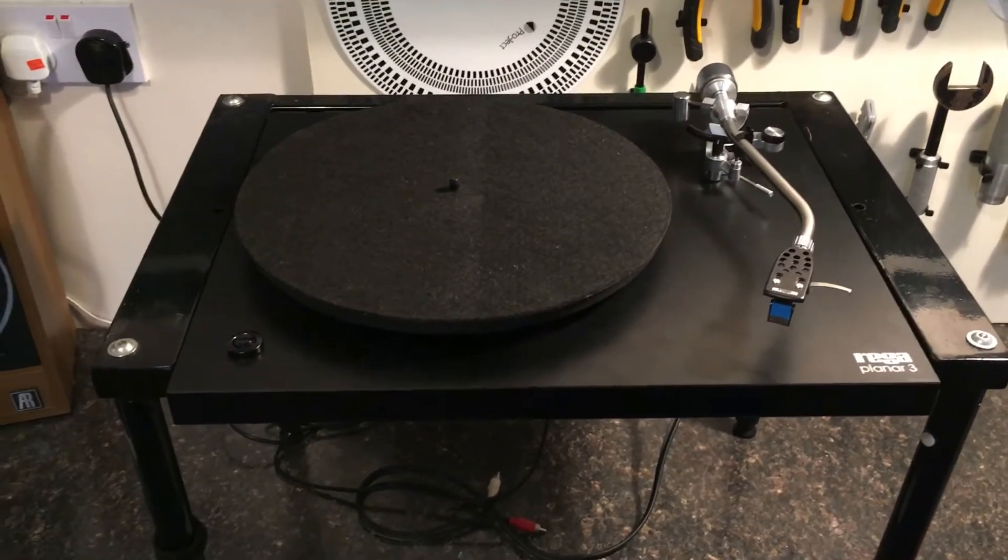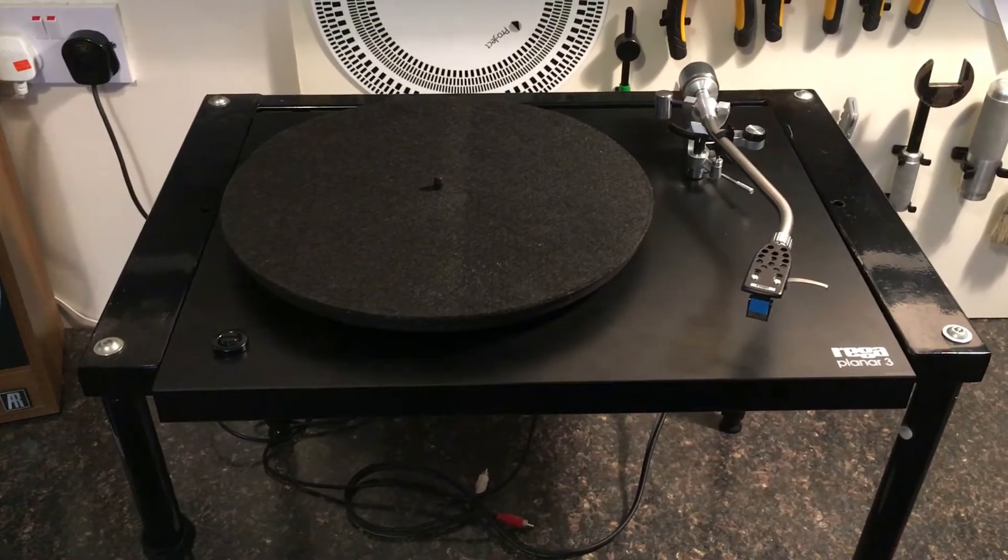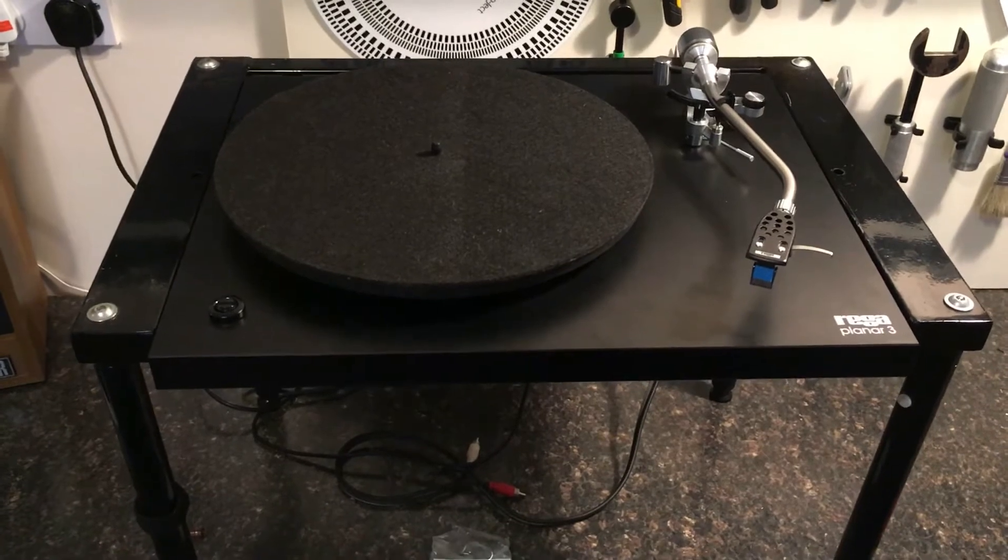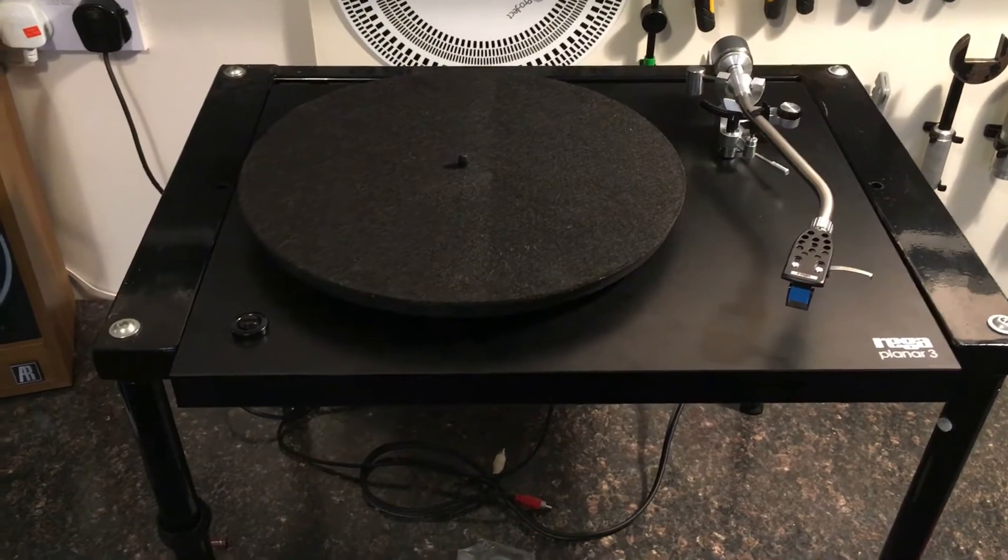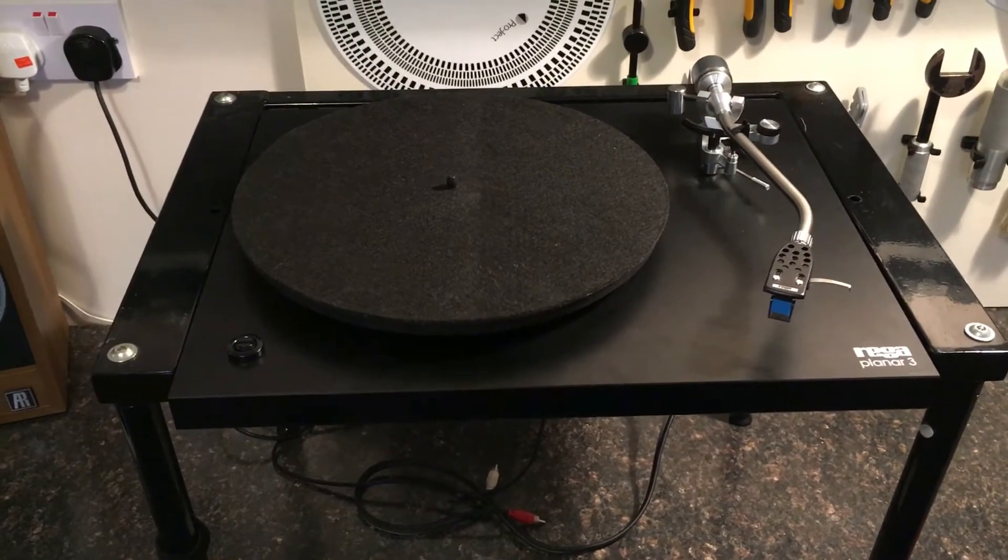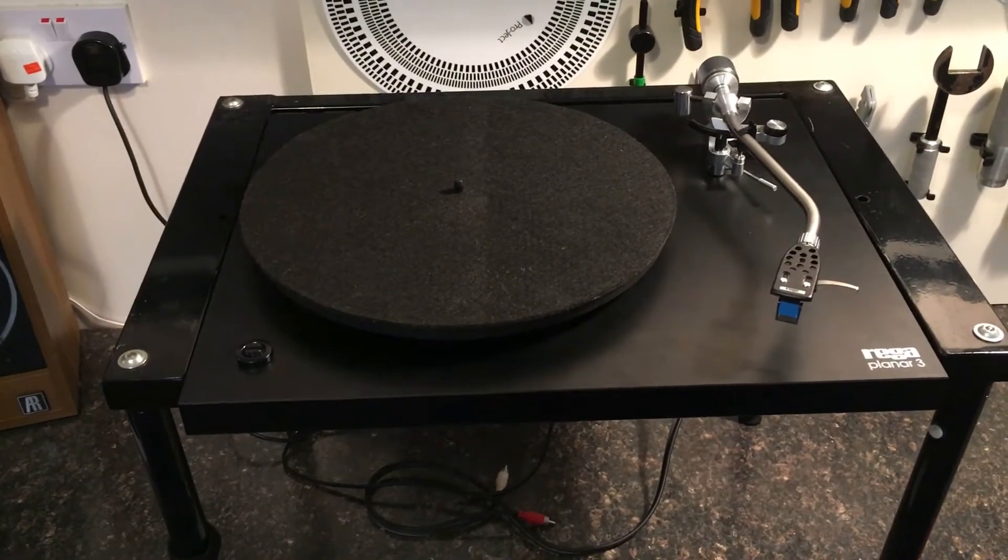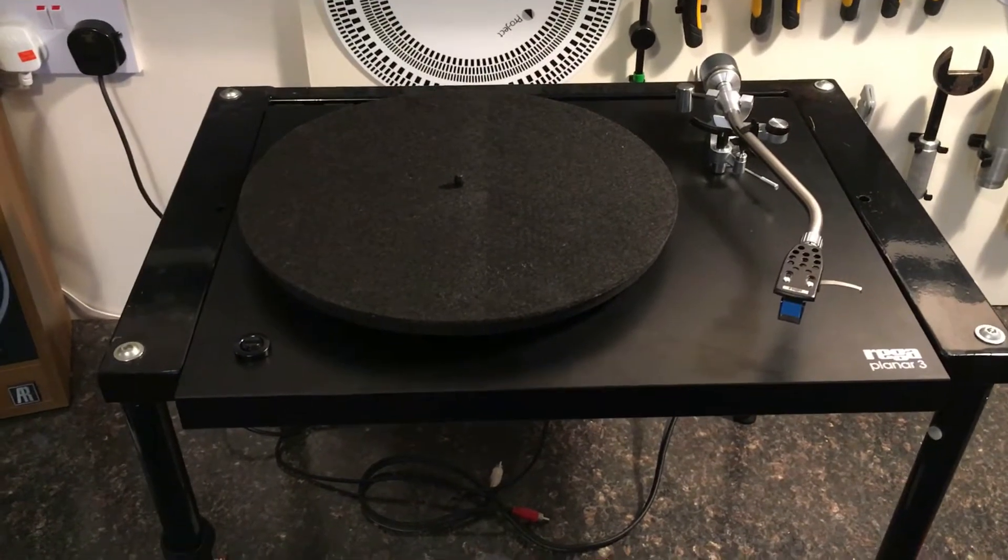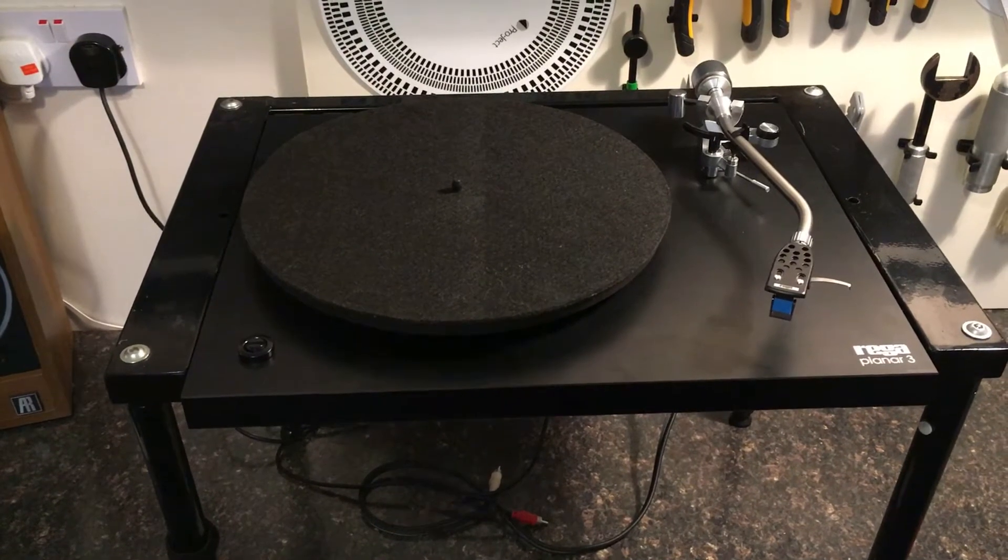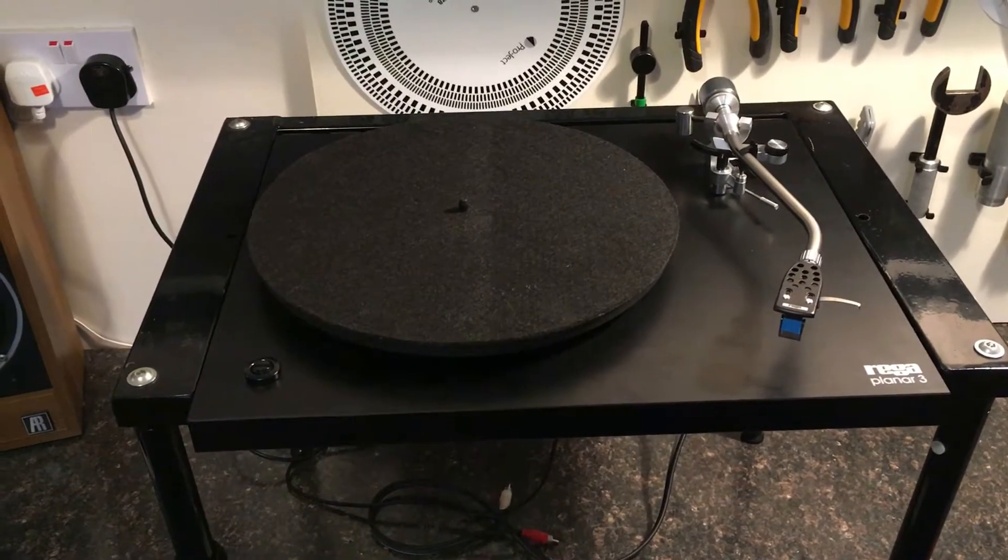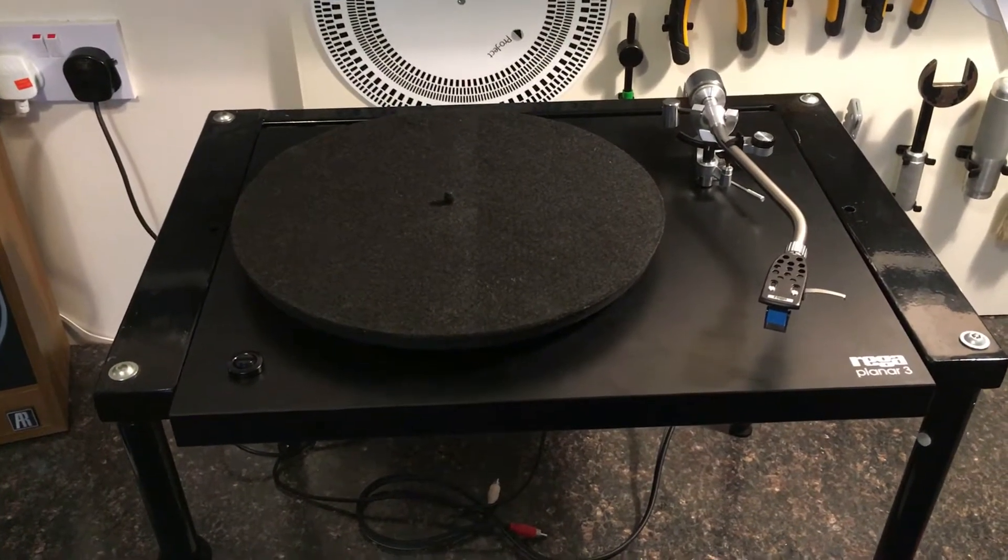Hello, in today's video we're going to have a further look at speed issues with Rega turntables. This is mainly concentrating on the earlier types, probably up to about 1970s decks to early 90s, which all used similar motor and board configurations. This is part 2. Part 1 covered a totally dead turntable, which is a rare thing, but there are issues occasionally that can cause that. Part 2 is if you're having a situation where the turntable is always running slow, if it's consistently slow, or very very slow to start up, then this is what we're looking at today.